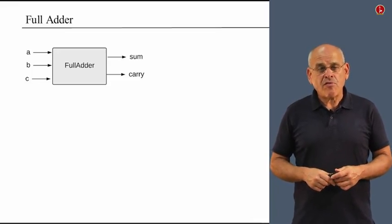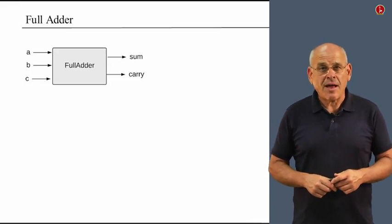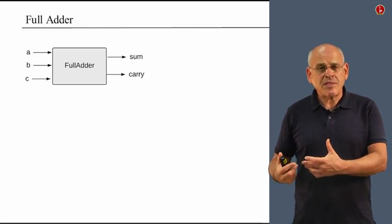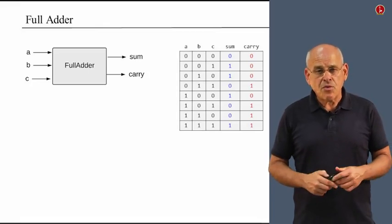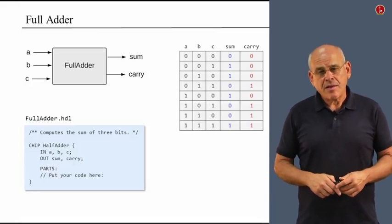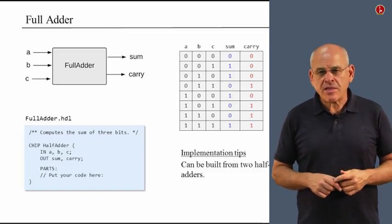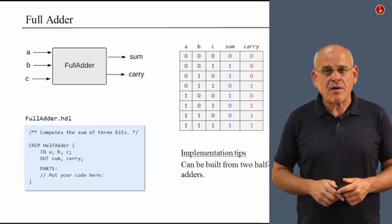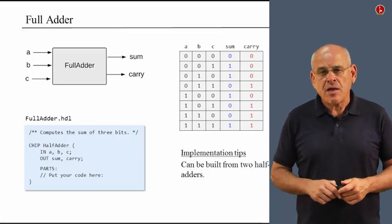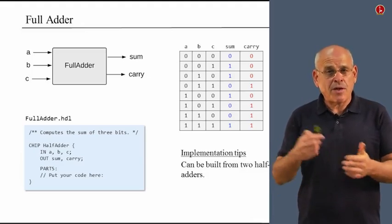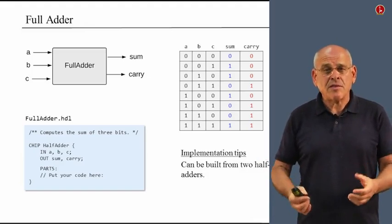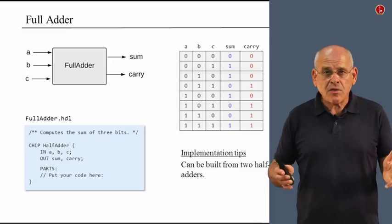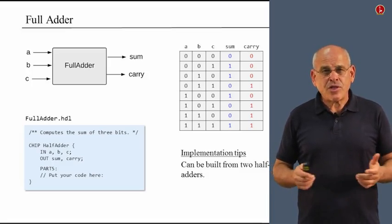The next chip up the hierarchy is called full-adder. The full-adder is slightly more powerful than the half-adder — it is capable of summing up three incoming bits and outputs the sum of the three bits and the carry. This is the truth table of the full-adder, and this is the stub file that you have to complete. In general, you can build a full-adder using two half-adders, which you put together and add some glue in the form of other logic gates. This is actually the reason why the simpler gate is called a half-adder — because it takes two half-adders, plus some other functionality, to deliver a full-adder. You can also implement a full-adder in other ways, so you're welcome to come up with any HDL implementation that makes sense.